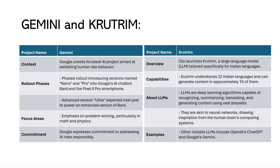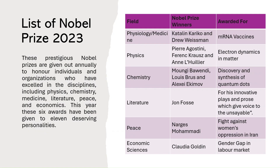The Nobel Prizes for 2023: in Physiology or Medicine, Katalin Karikó and Drew Weissman were awarded for the discovery of mRNA vaccines; in Physics, Pierre Agostini, Ferenc Krausz were awarded for electron dynamics in matter; in Chemistry, Moungi Bawendi, Louis Bruce, and Alexei Ekimov for the discovery and synthesis of quantum dots; Literature to Jon Fosse; Peace to Narges Mohammadi for her fight against women's oppression in Iran; and Economic Sciences to Claudia Goldin for her study of the gender gap in the labor market.